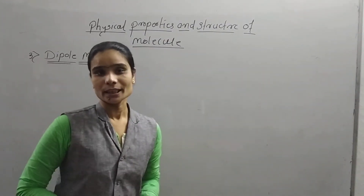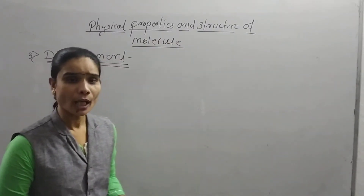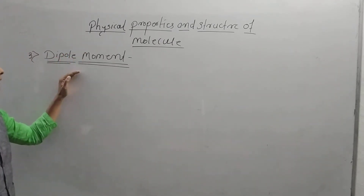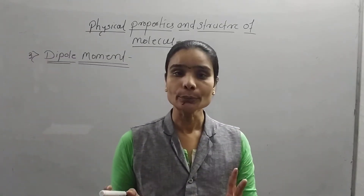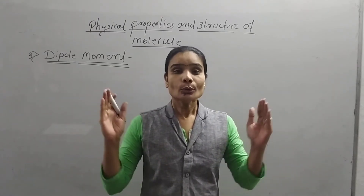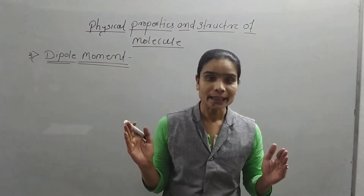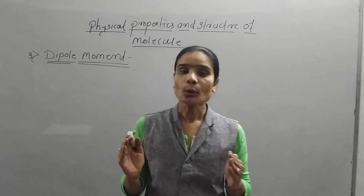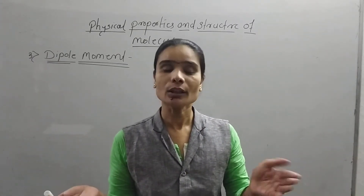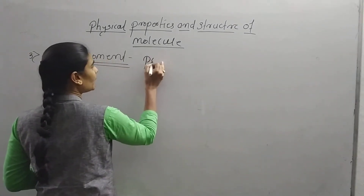Hello friends, we already discussed two main physical properties: optical activity and magnetic properties. Now the last and most important physical property in this chapter is dipole moment. Dipole means two ends, and in chemistry or in case of a molecule, those two ends are the positive end and negative end. Dipole moment is related with such molecules which have a positive end and negative end, or positive charge and negative charge. This dipole moment is related with polarization.